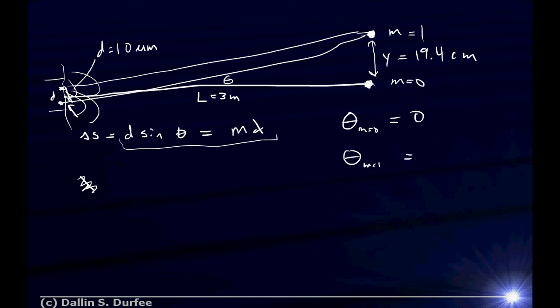it's going to be the arctangent of this distance, which is y, divided by this distance, which is l, alright? Now, because y is so small compared to l, maybe we can get away with a small angle approximation. But hey, maybe not. We've got our calculator. Let's just leave it like that for now, alright?